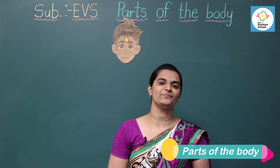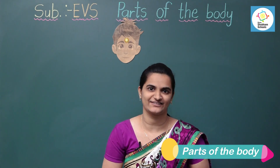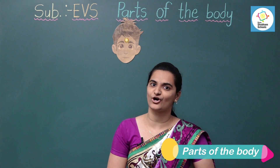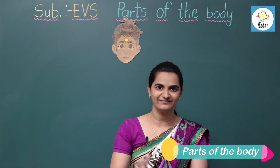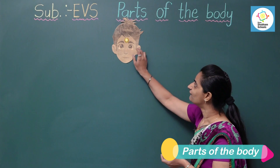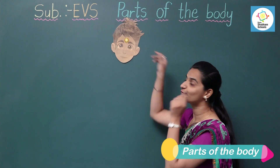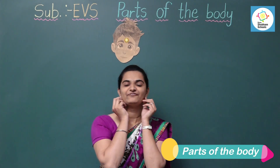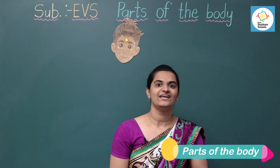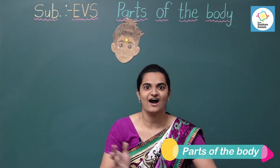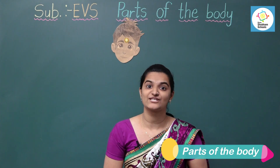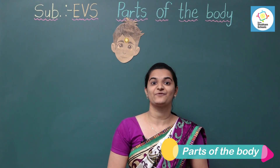With our eyes, we can see all kinds of things. We can see this beautiful and colorful world with our eyes. Next, we have two ears. We can listen with our ears. With our ears, we can hear many kinds of sounds.